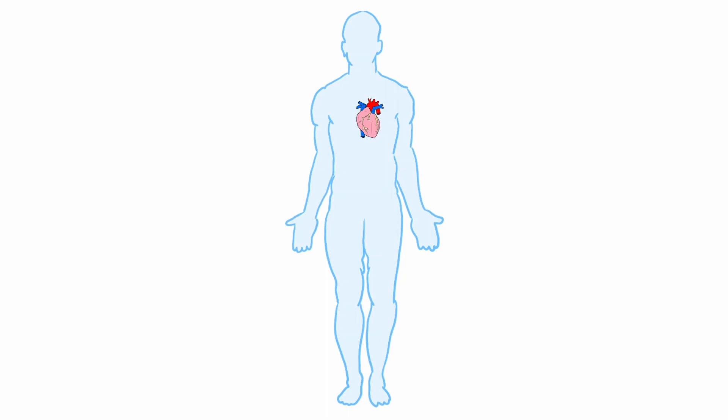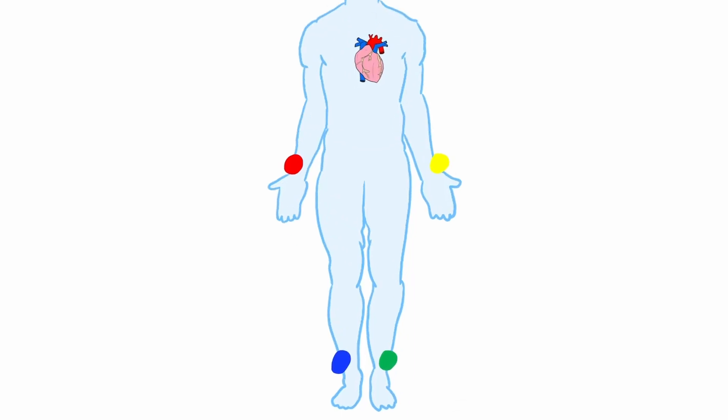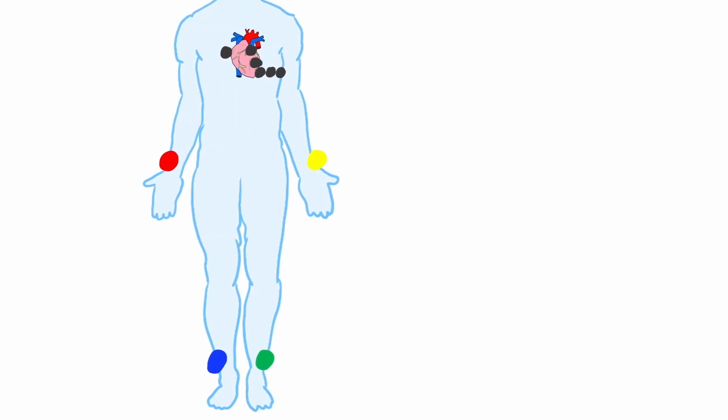All of this electrical activity can be detected using electrodes on the skin. Typically, 10 electrodes are placed, one on each limb and six on the chest. An easy mnemonic to help remember the color order of limb electrodes is ride your green bike, starting at the right arm and going clockwise.